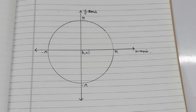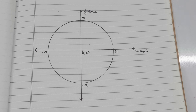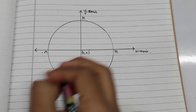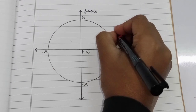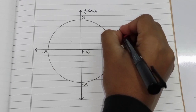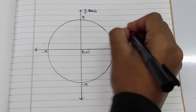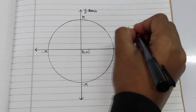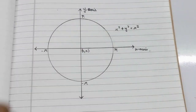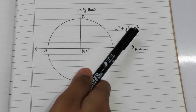Let's say that we have a graph of a circle. We know that the equation of a circle on a graph is x² + y² = r², where r is the radius.